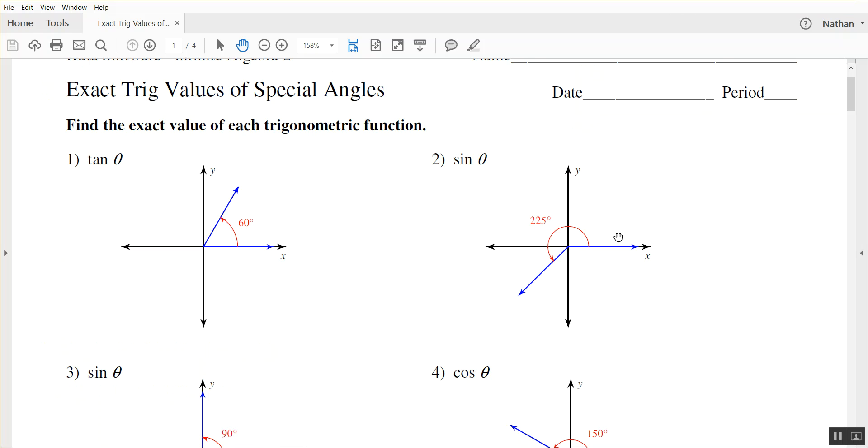How did you know that? 225 minus 180. Yep, so we want to find this little angle in here. Does that make sense to everyone? All right, and the other thing we need to do is figure out if it's positive or negative.